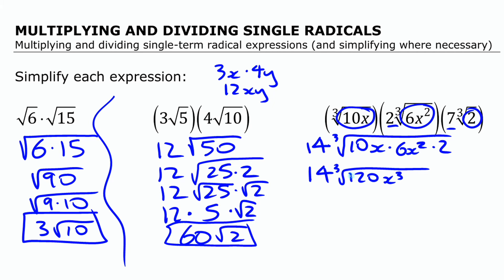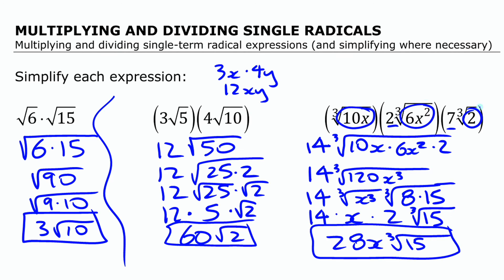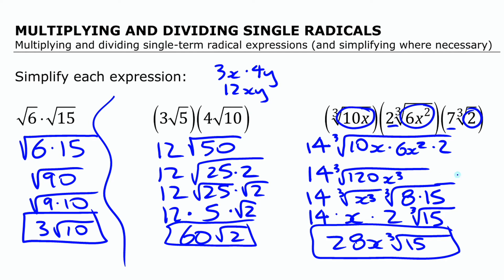At this point we want to simplify things. Anything that's a perfect cube, we're going to take out. x cubed is a perfect cube. Writing the x cubed by itself and writing 120 as 8 times 15 — because 8 is also a perfect cube — I have 14 times cube root of x cubed times cube root of 8 times cube root of 15. Cube root of x cubed is x, and cube root of 8 is 2. Cube root of 15 we leave. So we get 28x cube root of 15. This is the simplest form because it has the smallest number underneath the radical sign.